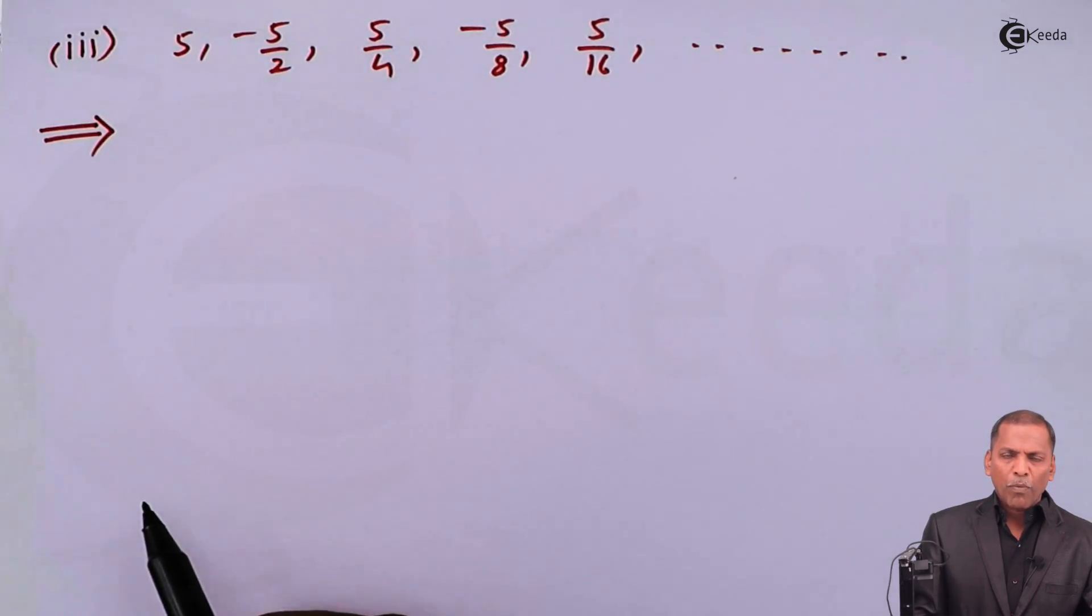For this problem we have to find whether sum to infinity exists or not, and if it exists then we have to find sum to infinity in that case. Now let's see the solution.